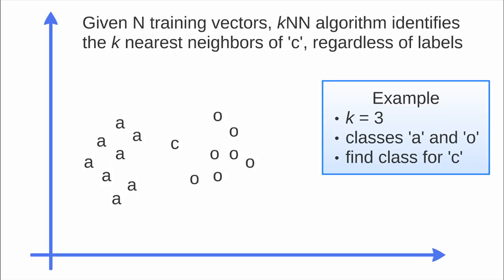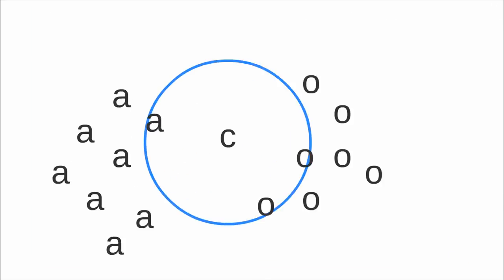If K equals 3, we have to find the three nearest neighbors of C. We can see that in this case the three nearest neighbors of C are these three elements here.